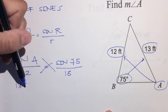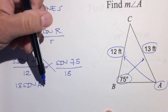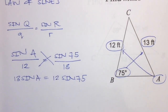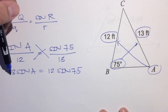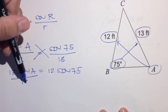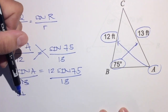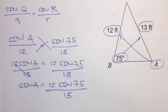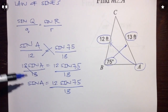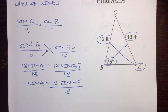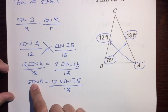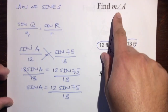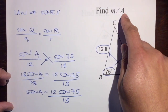We're going to cross multiply: 13 times the sine of A is equal to 12 times the sine of 75. Our goal is to get A by itself. This 13 is multiplying sine of A, and the opposite of multiplication is division, so we cancel that out. We have: sine of A is equal to 12 sine of 75 over 13. A isn't by itself yet, so we have to get rid of the sine. The opposite of sine is the inverse sine.